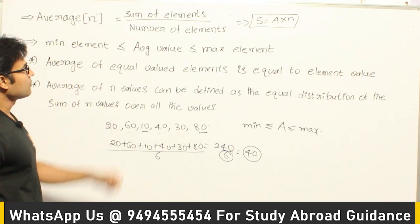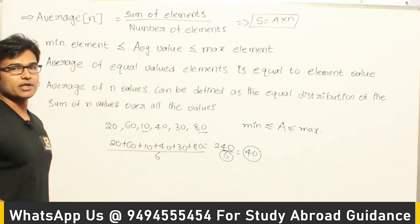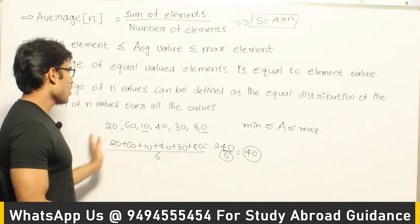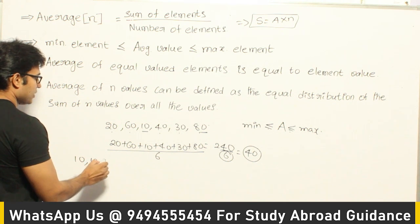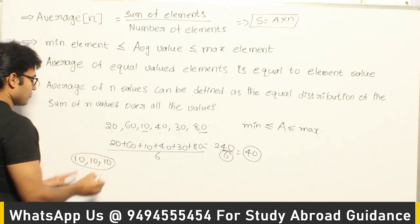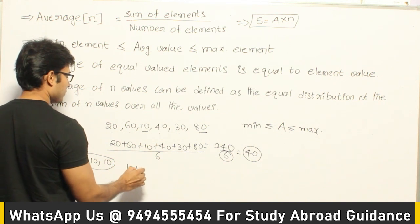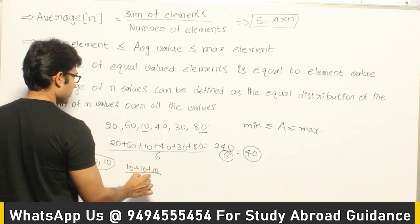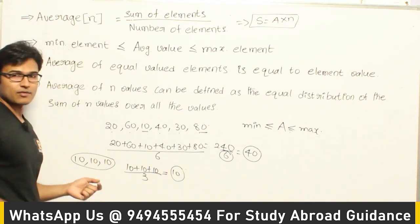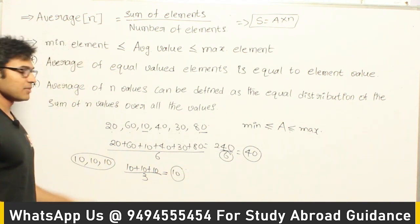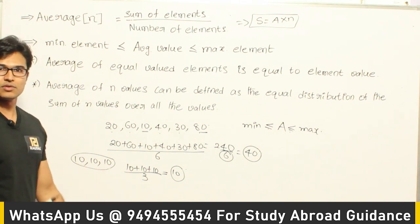Now average of equal valued elements is equal to the element value. Now assume that if all the elements, 3 elements I have which are all 10, 10, 10, then what is the average of it? 10 plus 10 plus 10 divided by 3. See one common mistake you do is whenever a question about average is asked, you add it and divide it by 2. So that is not the average. You have to divide it with the number of elements.